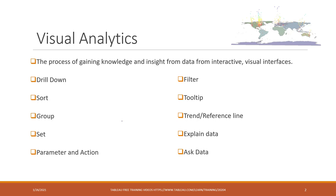Some of those functions are the most common tools for visual analytics. Some we saw earlier, like drill down and sort — we also saw an example of group and parameter. We also used filter, tooltip, reference lines, and trend lines. This week we will go deeper into those functions and see how they can help us better understand the data.